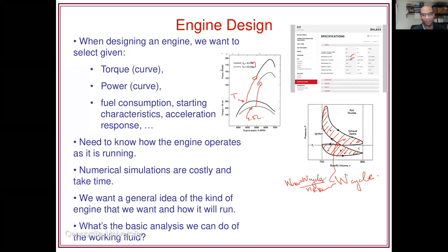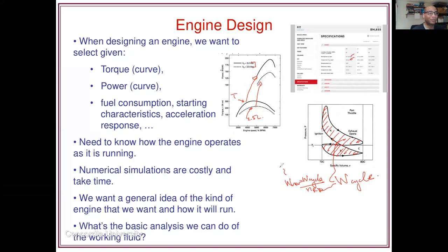For a four-stroke engine it's divided by two; for a two-stroke engine it's the same number because every revolution gives me a full cycle. If we have the work done in one revolution, that is almost the torque — the torque is basically the work done per radian. One revolution is two pi radians, so the torque of my engine is the work done in a revolution divided by two pi.